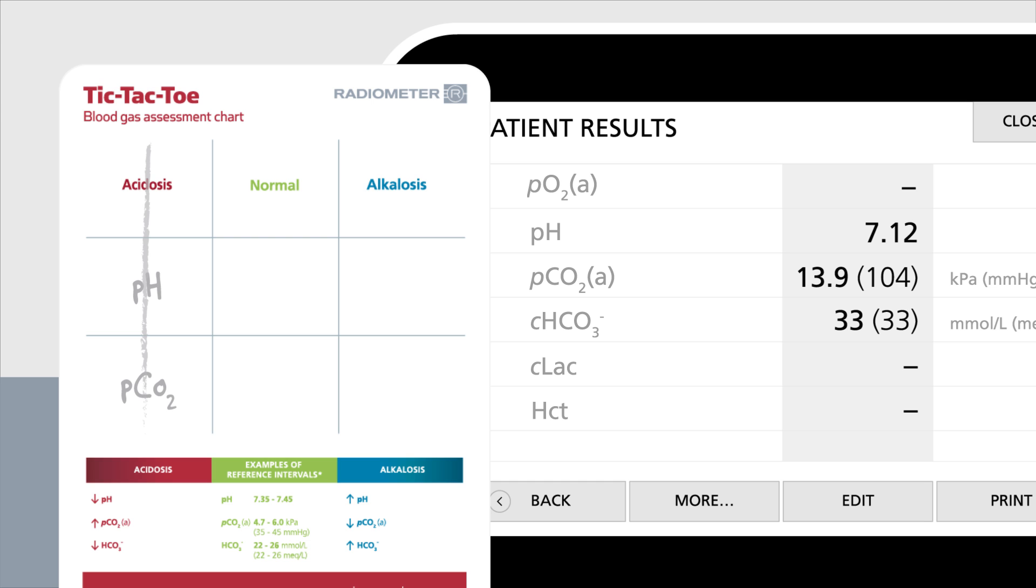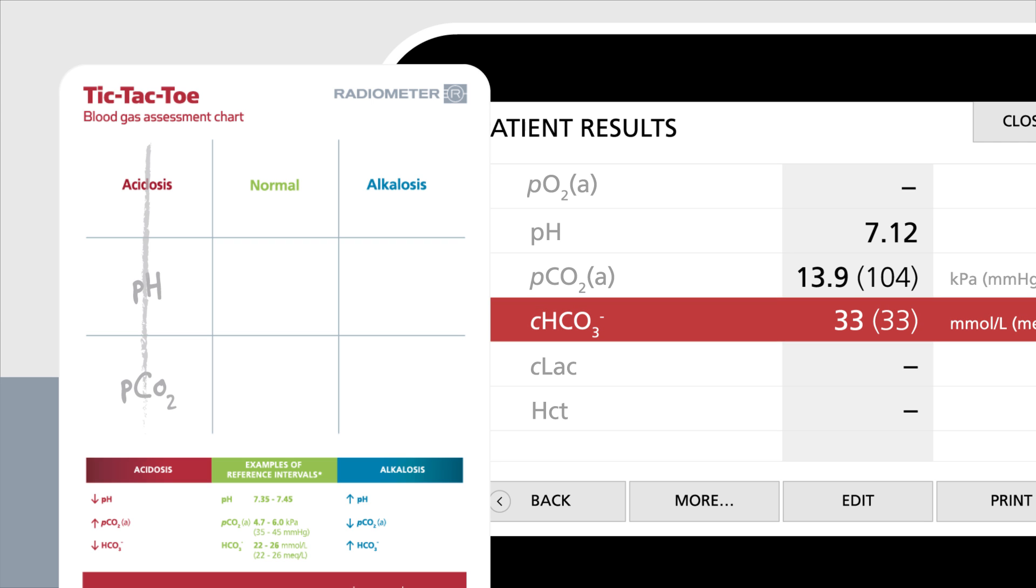The next thing to look for is if the body has tried to compensate for this imbalance. If not, the bicarbonate would be within the normal range as compared to the reference interval. In this case, the bicarbonate level is above the reference interval, which means that compensation is taking place.